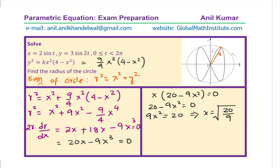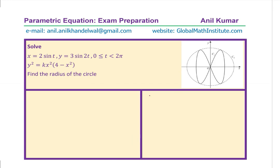That becomes the value of x for which we will get maximum radius. Now radius could be from 0 to that limit. What we can now do is substitute this value and find what r is. We found that r² simplified equation was 10x² minus 9 by 4 x⁴. In this equation, we are substituting x equals to square root of 20 by 9. We get r² equals to 10 times 20 by 9 minus 9 over 4 times (20 over 9)².